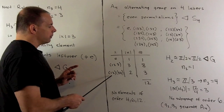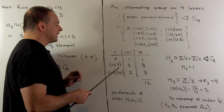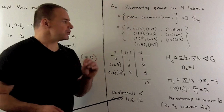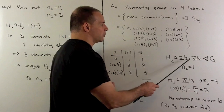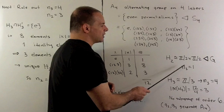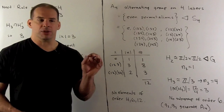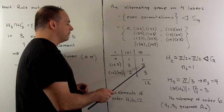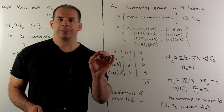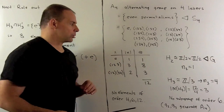We have only 3 elements of order 2, so when we put the identity in, it gives us a unique subgroup of order 4. So H_2 is going to be isomorphic to Z_2 cross Z_2; it's normal in our group, so we have n sub 2 equal to 1. If I consider elements of order 3, we have 8 of these. Comparing each element with its inverse and including the identity gives us a Sylow 3-subgroup, so we have 4 of those.